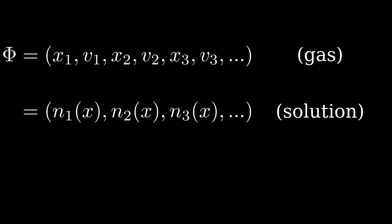In general, we are going to denote the set of variables we use to describe the particular state our system is in with the letter phi. For a gas, this might be the position and velocity of every molecule. For a chemical solution, it might be the concentration of each reactant at each point in space. Or for a magnet, it might be the degree of magnetization of the material at each point in the magnet.